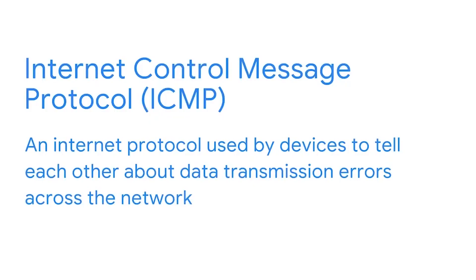Malicious actors can take advantage of the protocol by flooding a server with SYN packet requests for the first part of the handshake. If the number of SYN requests is larger than the number of available ports on the server, then the server will be overwhelmed and become unable to function. ICMP stands for Internet Control Message Protocol. ICMP is an internet protocol used by devices to tell each other about data transmission errors across the network.